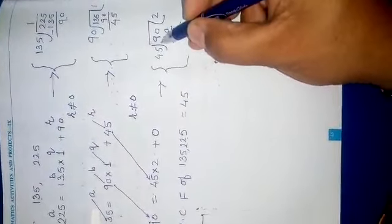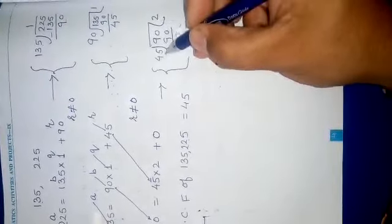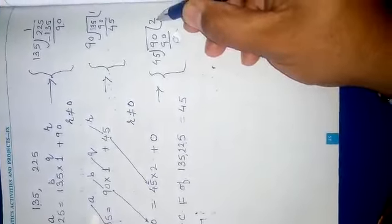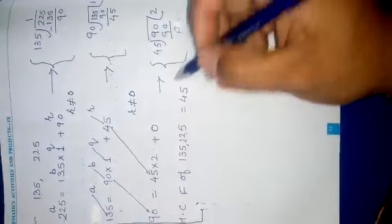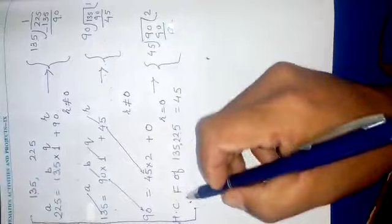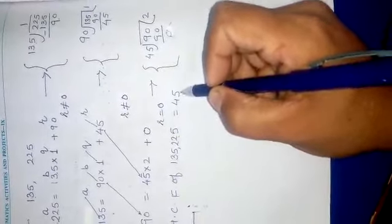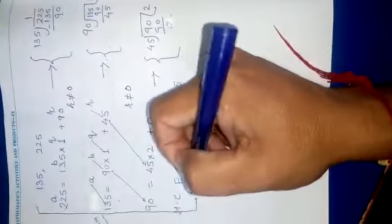90 by 45. The quotient is 2 and the remainder is 0. Finally, r = 0. Then the HCF of 135 and 225 is equal to 45. This process, these steps, are called the algorithm.